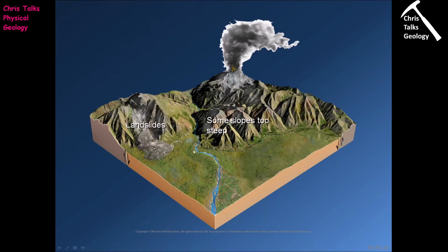Where we have steep slopes, we also have the risk of rockfalls and landslides. Mountainous areas tend to have high rates of erosion, which can weaken rocks and lead to large landslides — in geology sometimes referred to as mass flows. If you're living on or in the path of a landslide, you're in serious danger, which is another reason why living in mountainous terrain is generally not considered positive.